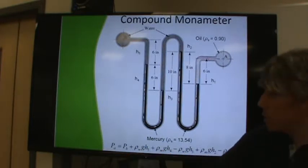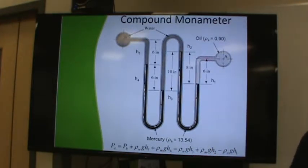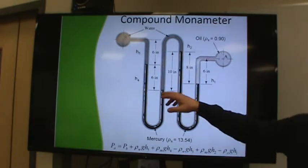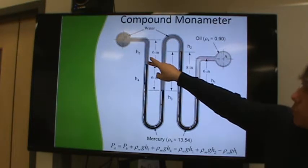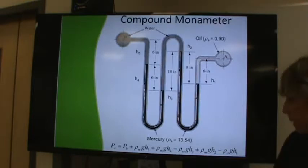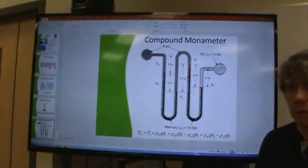So this is a simple equation that you can write very easily with compound manometers. And I think I've got a compound manometers problem on the homework for you. But you're just simply writing increase in pressure as you move down and decrease in pressure as you move up in the various fluids. Questions, comments? Are we doing okay?